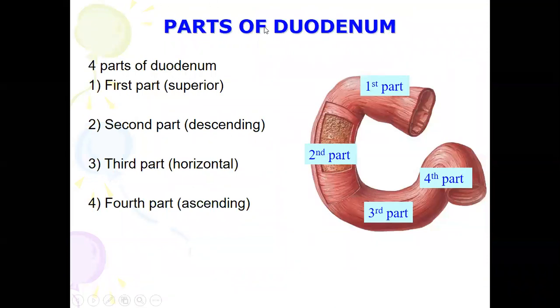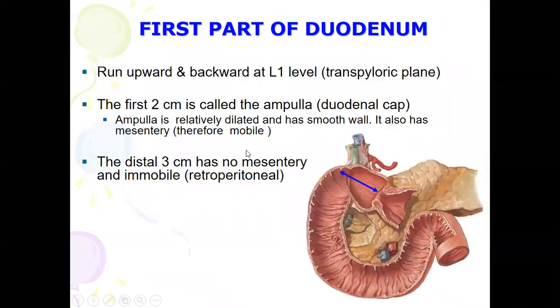The remainder of the duodenum has circular folds — plicae circulares. These folds are permanent and cannot be flattened out by distension, unlike the rugae in the stomach. The duodenum has four parts: the first part (superior), the second part (descending), the third part (horizontal), and the fourth part (ascending).